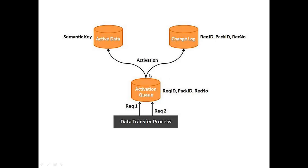To summarize: data initially reaches the DSO's activation queue table. Once you activate the DSO, the data is sent to both the active data table and the change log table. Reporting can only be done from the active data table — reporting cannot be done on the change log table.